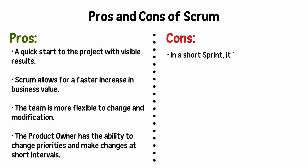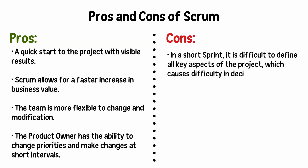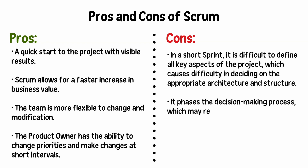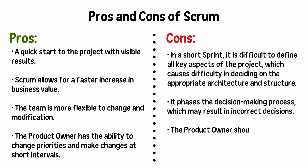Cons of Scrum: in a short sprint, it is difficult to define all key aspects of the project, which causes difficulty in deciding on the appropriate architecture and structure. It phases the decision-making process, which may result in incorrect decisions. The product owner should not make changes during an ongoing sprint.